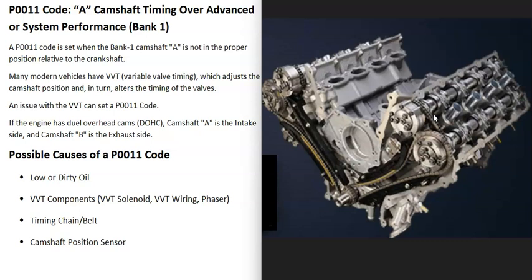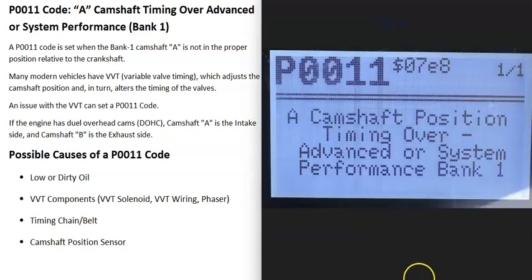When you get this P0011 code, the first thing to do is find bank one side of the engine — camshaft A is going to be on the intake side of the engine.